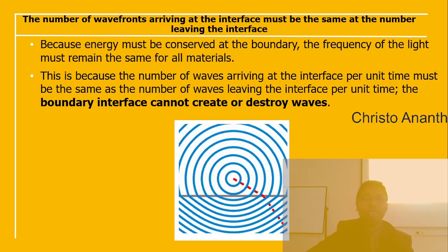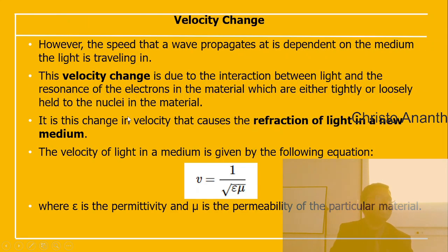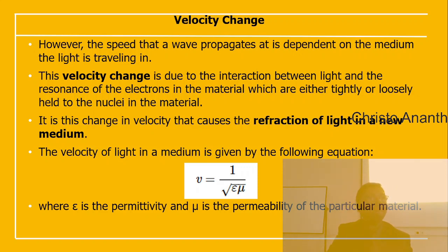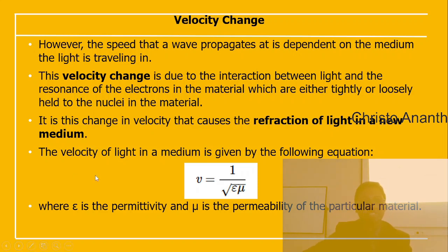The velocity change at the interface is due to the interaction between light and the resonance of electrons in the material, which may be tightly or loosely held on the nuclei. This change in velocity causes the refraction of light in the new medium. The velocity of light in a medium is given by v = 1 / √(εμ), where ε is permittivity and μ is permeability.